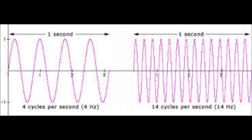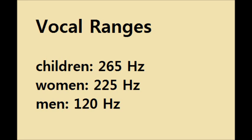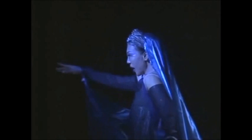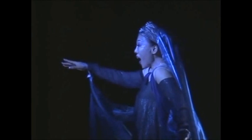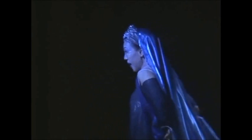The frequency of the vibrations is measured in cycles per second, or hertz. The average frequency for speaking is 265 hertz for children, 225 hertz for adult women, and 120 hertz for adult men. When the Queen of the Night sings the high F in her famous aria in the Magic Flute, her vocal folds are vibrating at 1,397 hertz.